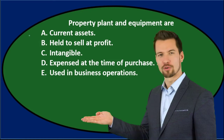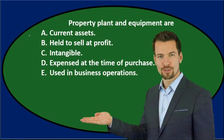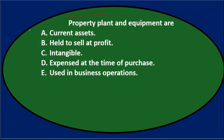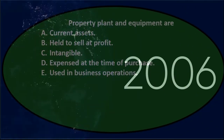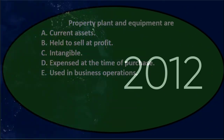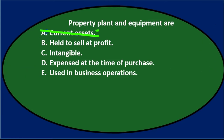We'll go through this again using the process of elimination. Property, plant, and equipment are A. Current assets. Now, property, plant, and equipment is not typically going to be current. It's going to be something that's going to be used over a year's time period and will be depreciated over the useful life. Therefore, not A — doesn't look correct.